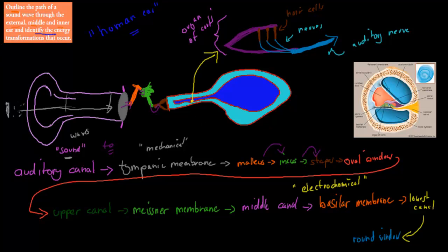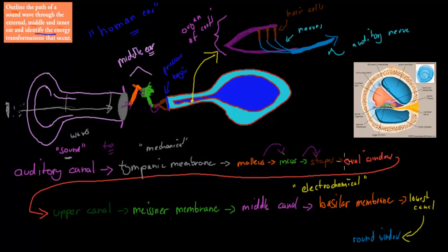Then what the stapes does — and this is part of the middle ear, all this is the middle ear — the stapes pushes against the oval window. The oval window is where pressure begins, where the actual pressure is applied by the stapes, and that will make the fluid inside the cochlea move. So pressure begins at the oval window. Now we have movement of water, but water moving is still mechanical energy — it's just gone from movement of bone to movement of water.